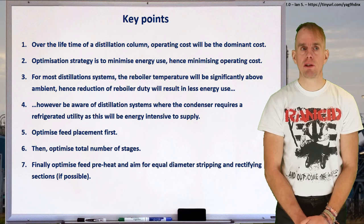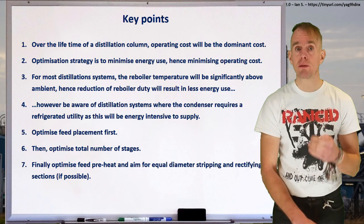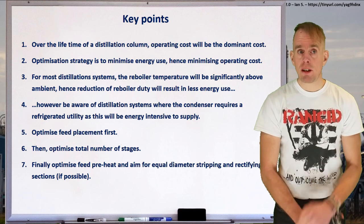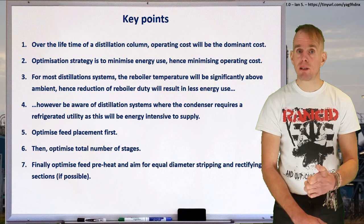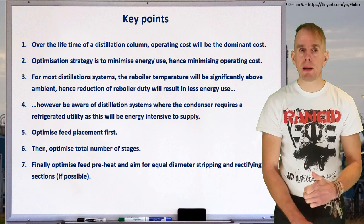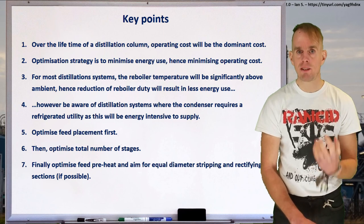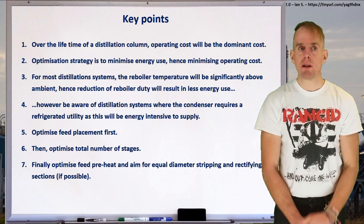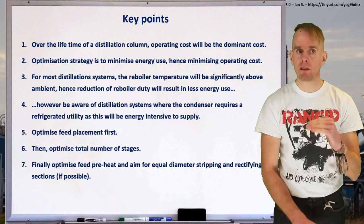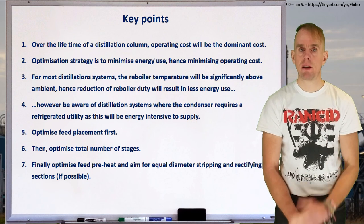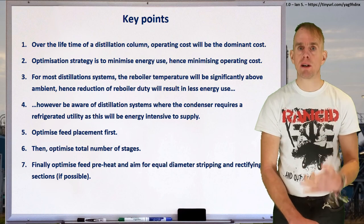Let's recap a few key points. Over the lifetime of a distillation column, operating cost is going to dominate. Your optimisation strategy is therefore to minimise energy use. For most distillation systems, the reboiler temperature is going to be significantly above ambient, so reducing reboiler duty results in less energy use — but don't forget cryogenic systems, where refrigeration is incredibly expensive and very carbon intensive. When we went through our strategy, we optimised feed placement first, fixed the NR to NS ratio, then optimised the total number of stages, and finally optimised feed preheat, aiming for equal diameter in the stripping and rectifying sections whilst also getting the lowest combined reboiler and condenser duty.